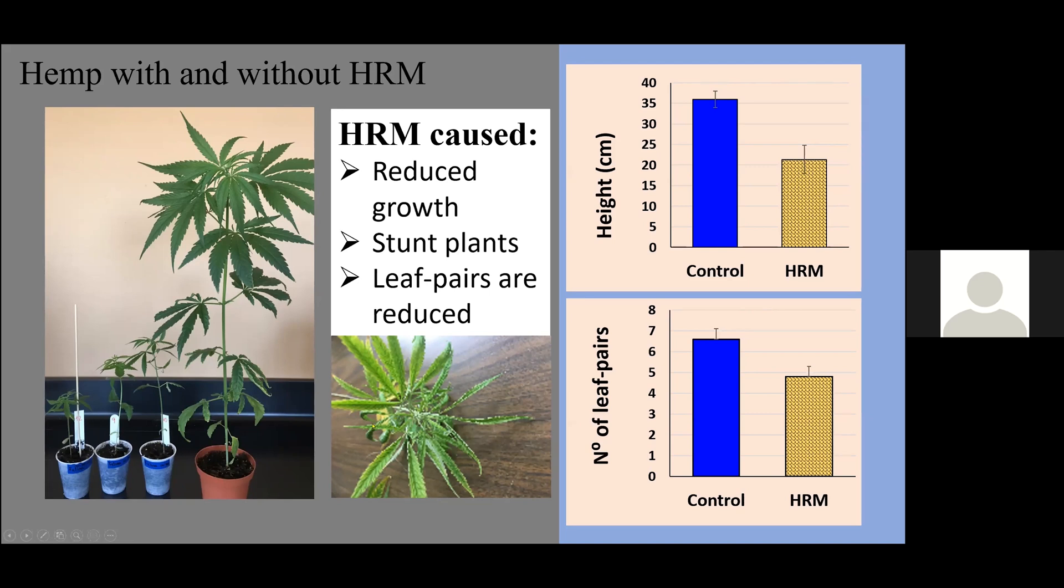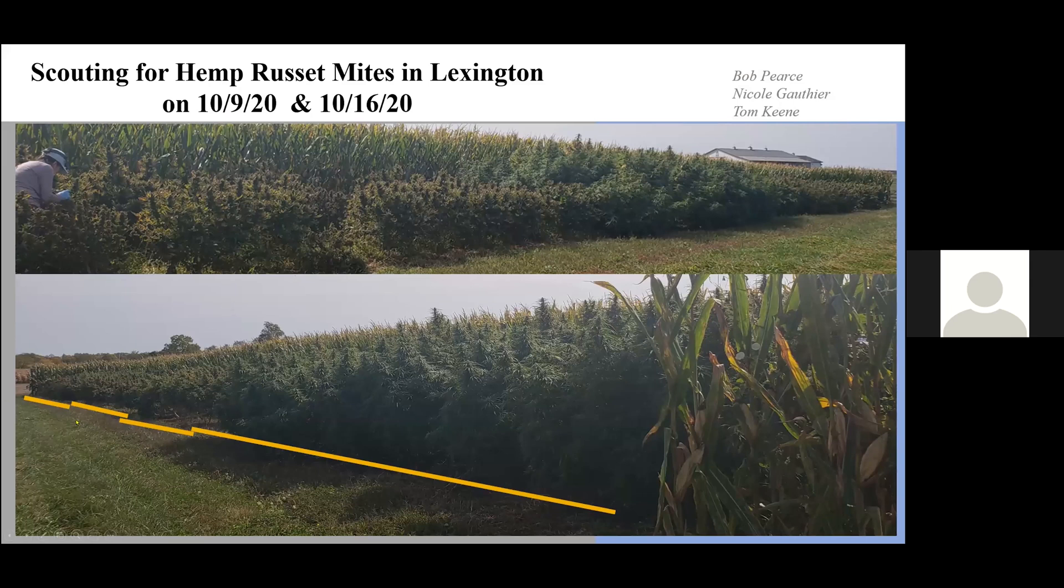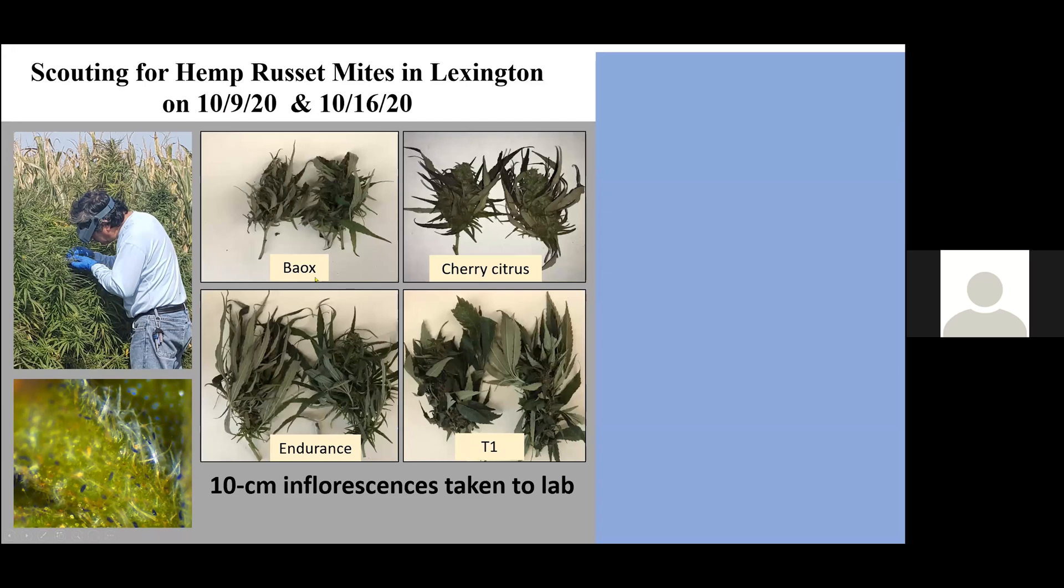We did some scouting in Princeton and also in Lexington. But due to the COVID situation, we only went to Lexington twice. The main purpose for this was to scout for corn earworm. There were four varieties of hemp. While I was scouting for corn earworms, we noticed that there were some plants that have this kind of black specks. I'm using a head lens. That's very important. Then what we did is we took 10 centimeters inflorescence to the laboratory from Lexington to Princeton.